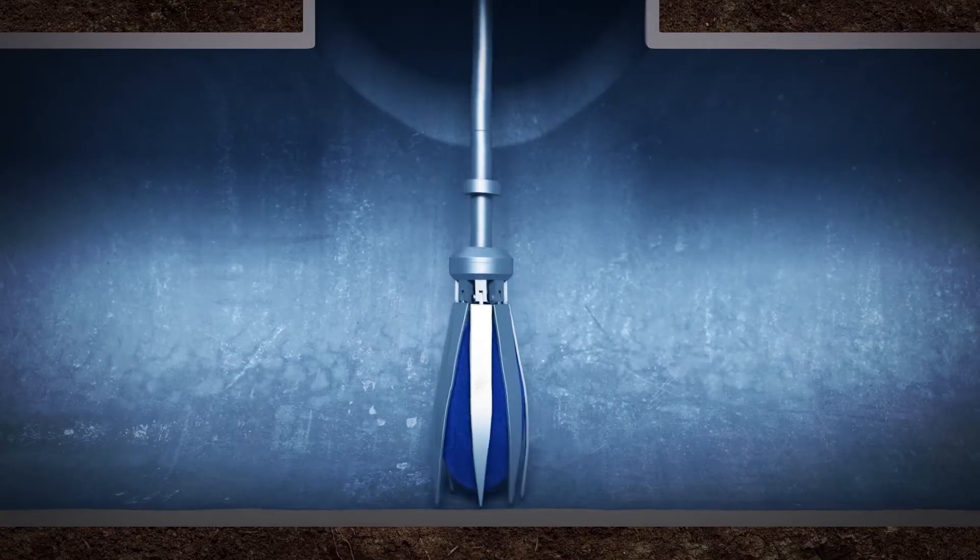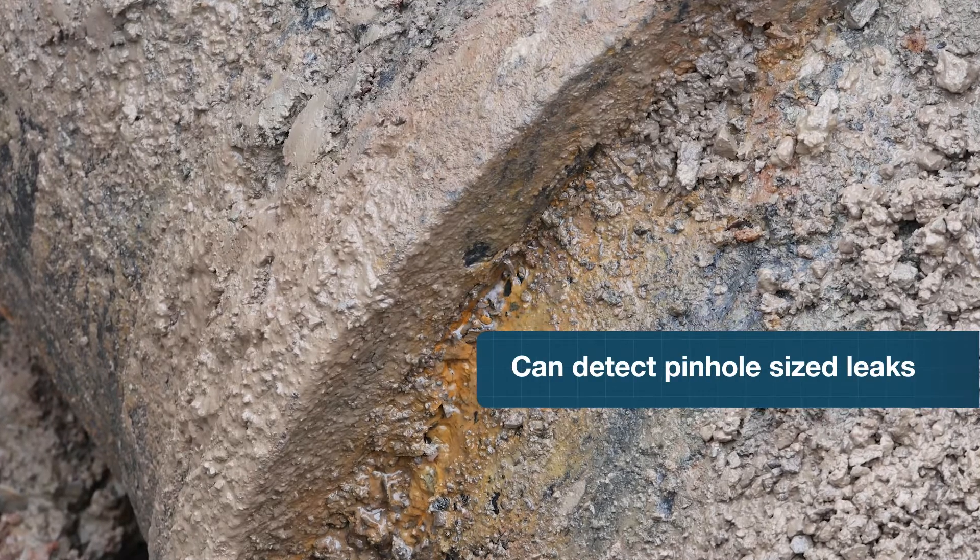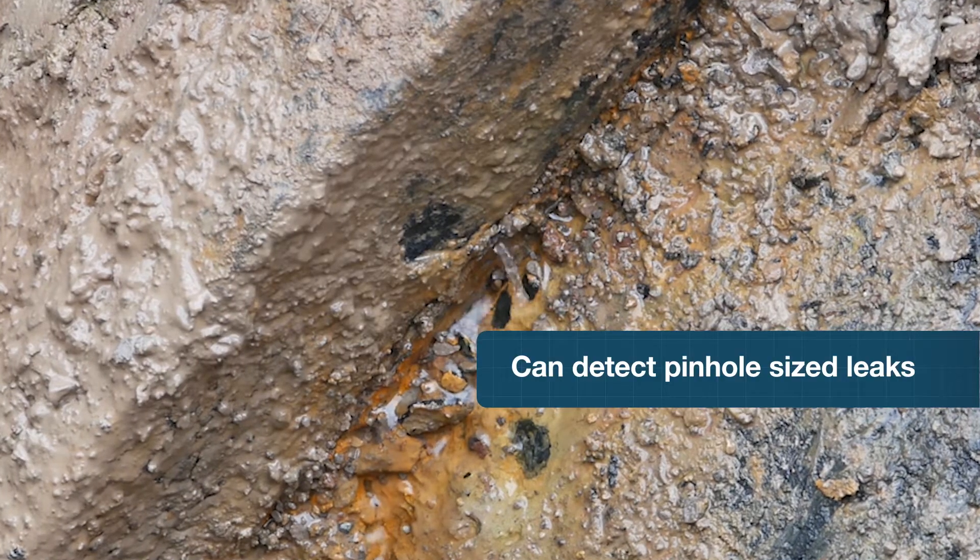On the non-revenue water side, because we are taking the acoustic sensor directly to the leak, we can inspect transmission mains with a greater level of accuracy than traditional correlators.